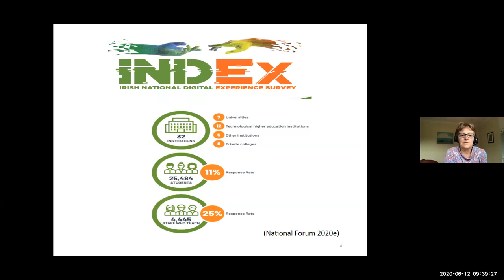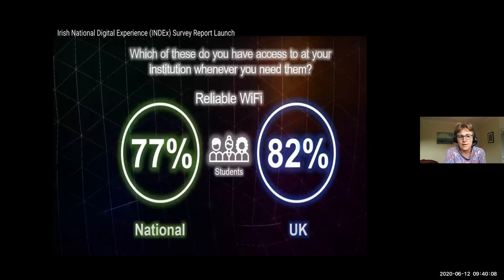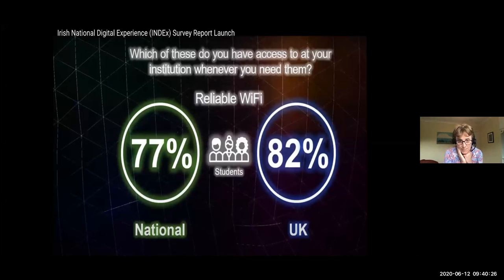A recent national survey in Ireland — the Irish National Digital Experience Survey — was conducted before COVID-19, with 25,000 students across 32 institutions. It revealed that in Ireland, 70% of students had reliable Wi-Fi compared to 82% in the UK, meaning a higher proportion of Irish students lacked reliable connectivity. This raises serious equity and inclusion concerns — if students cannot access assessments online, we are cutting out a whole group.